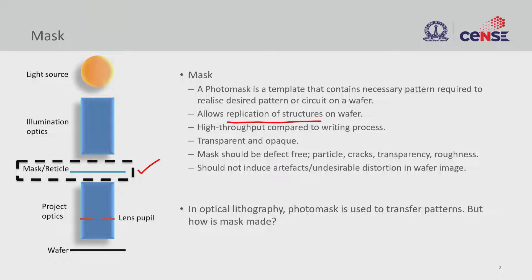The mask allows us to replicate structures on the wafer with high throughput — that is the primary idea of using a mask instead of writing each and every structure individually. The mask should have transparent and opaque regions that define the structure, and the mask should be defect-free. We only want the structures we want; any additional features are defects. Defects can come from particles, cracks, transparency issues where opacity is expected, or roughness.